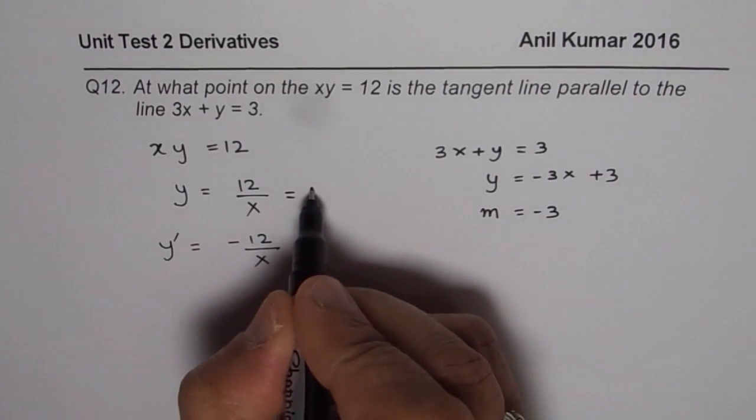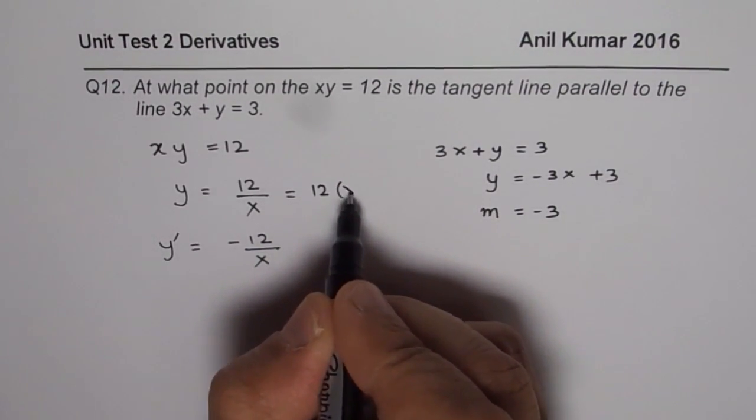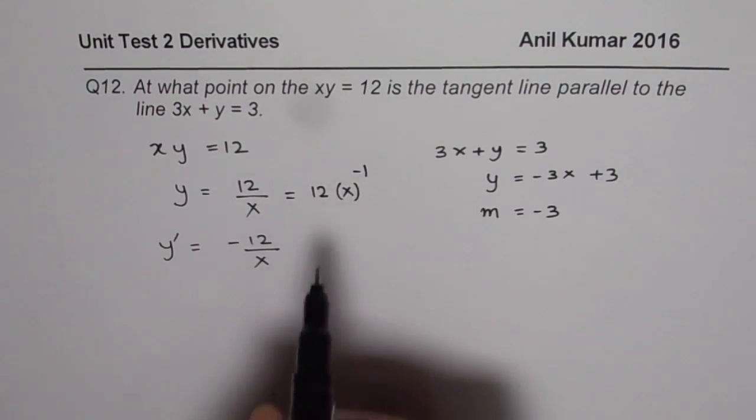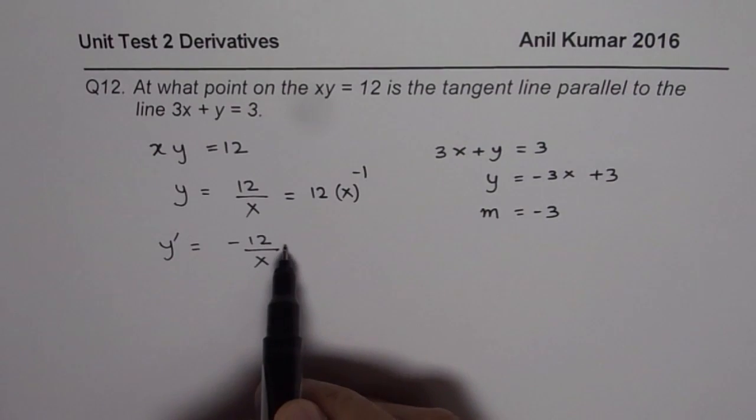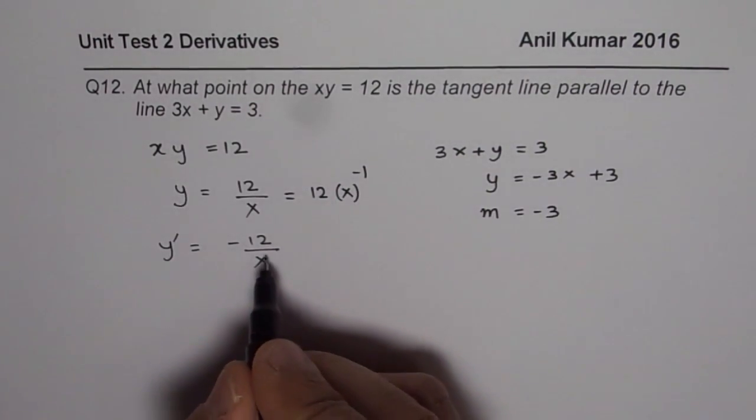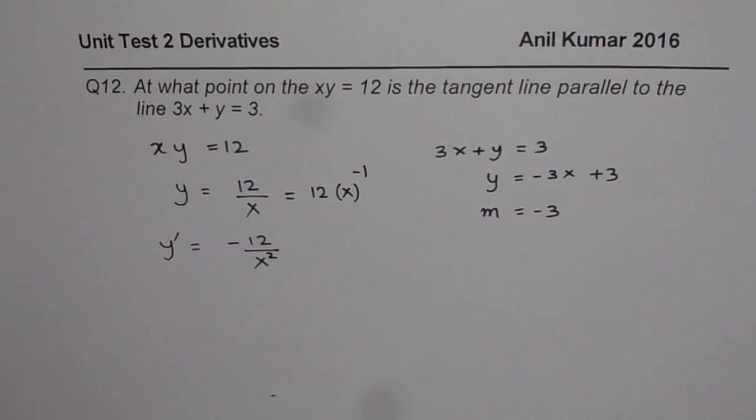At times, some students will write this as 12 times x to the power of minus 1, and then apply the power rule, minus 12x to the power of minus 2. So here there should be a square. Okay, so that is the right derivative.